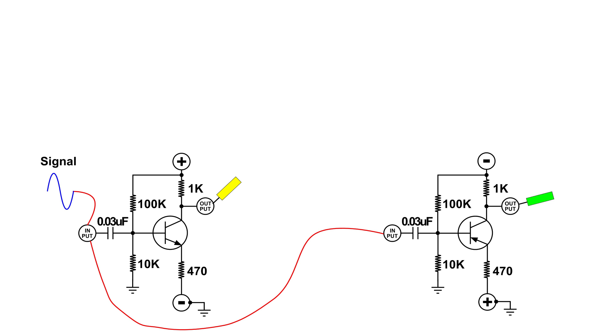Here I have connected the two stages together. This is known as cascading. The output of the first stage is connected to the input of the second stage. Now we know we have amplification in both stages, so at the output we should have a higher signal.